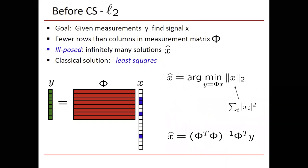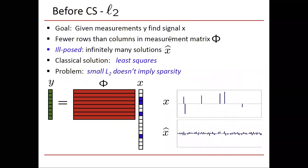L2 is fine and people used it for hundreds of years, but the problem is that a small L2 norm doesn't necessarily imply sparsity. Here's an example where x is sparse but x-hat would be dense — dense meaning the opposite of sparse, a lot of small coefficients. Why is that? The intuition could be as follows.